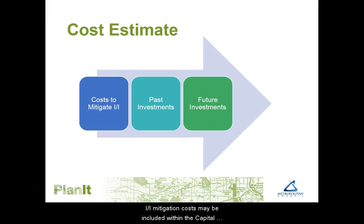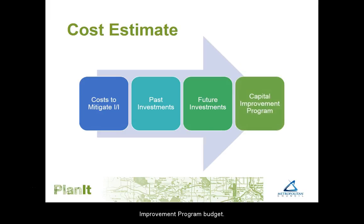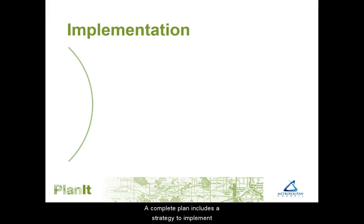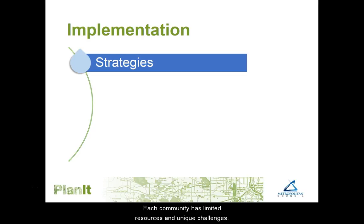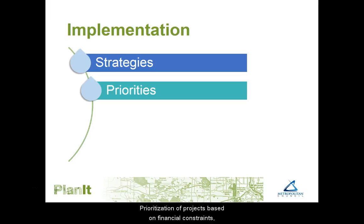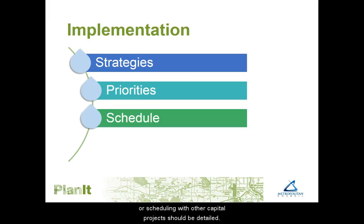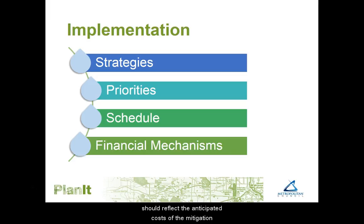I&I mitigation costs may be included within the Capital Improvement Program budget. If this approach is used, please refer to the program or budget within the text of the wastewater plan. A complete plan includes a strategy to implement corrective actions to mitigate I&I based on the findings of the system analysis. Each community has limited resources and unique challenges. Prioritization of projects based on financial constraints, effect on flow reduction, or scheduling with other capital projects should be detailed. The funding sources and amounts should reflect the anticipated costs of the mitigation projects detailed in the cost estimate.